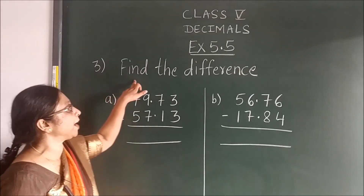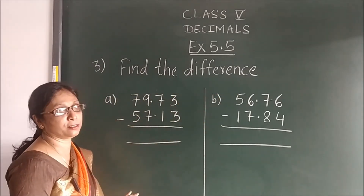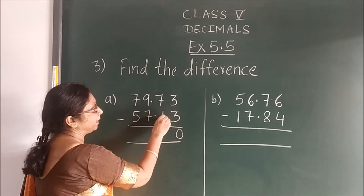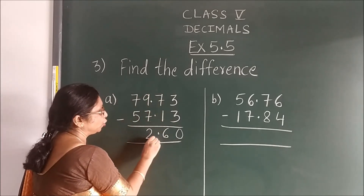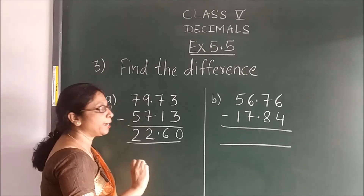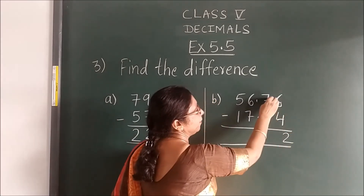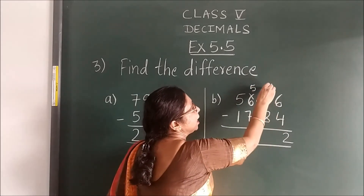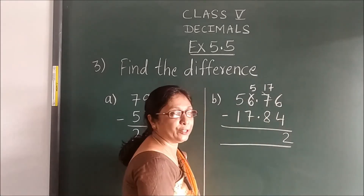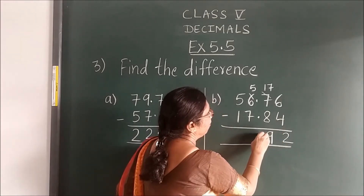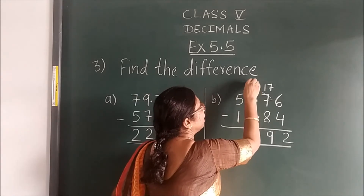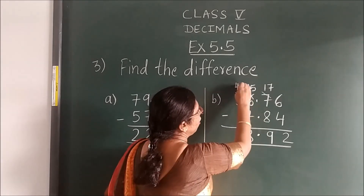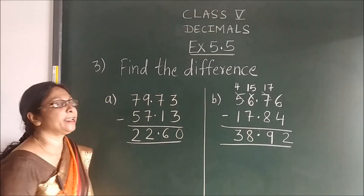Now in question number 3, find the difference. In the previous question we have seen sum. Now this is difference — difference means minus. Carry out minus; it is simple subtraction. 3 minus 3 is 0. 7 minus 1 is 6. 9 minus 7 is 2. 7 minus 5 is 2. Here also: 6 minus 4 is 2. 7 minus 8 — not possible, so borrow from here. This becomes 17, and this becomes 1 less, that is 5. 17 minus 8 — what will come there? 9. Then 5 minus 7 — not possible, borrow. This becomes 15, this becomes 1 less. 15 minus 7 is 8. 4 minus 1 is 3. In this way you can carry out subtraction.